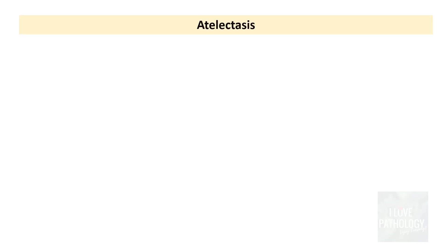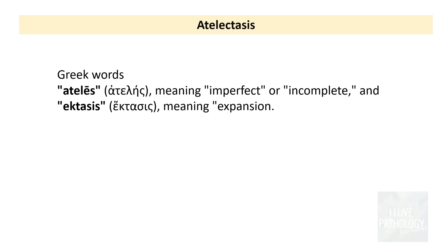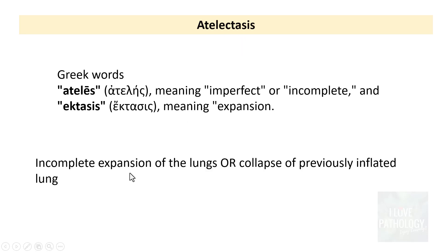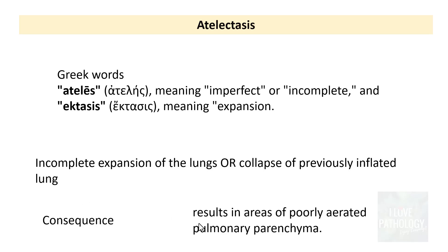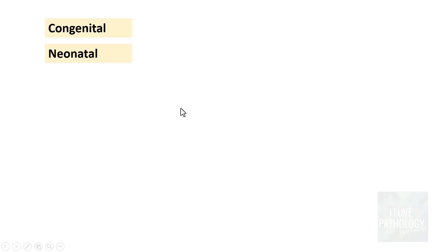Firstly, atelectasis. This is a combination of two Greek words: ateles, meaning imperfect or incomplete, and ektasis, meaning expansion. By definition, atelectasis is incomplete expansion of the lungs or collapse of previously inflated lung parenchyma — both terms are used interchangeably. The consequence of atelectasis is areas of poorly aerated pulmonary parenchyma.